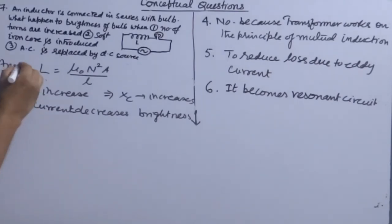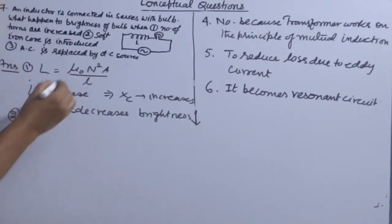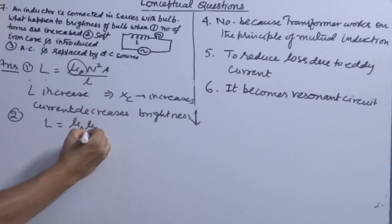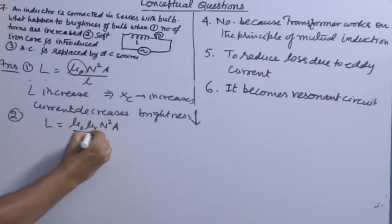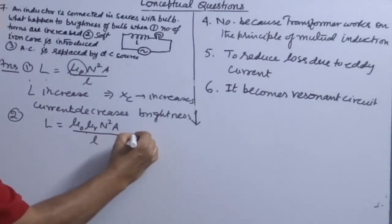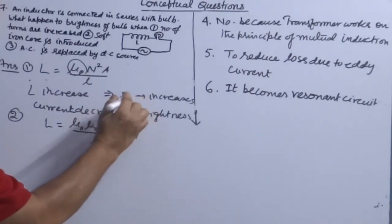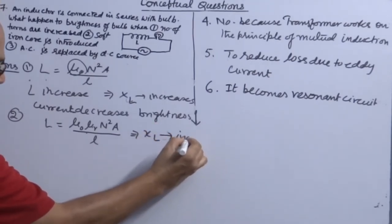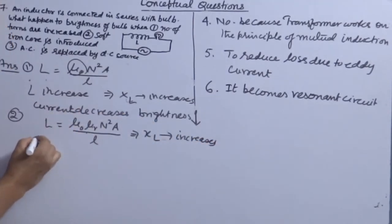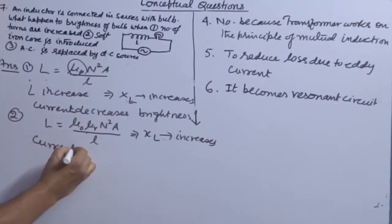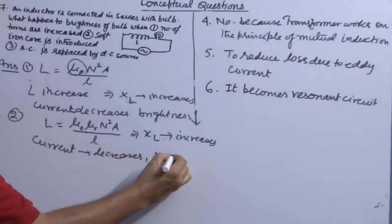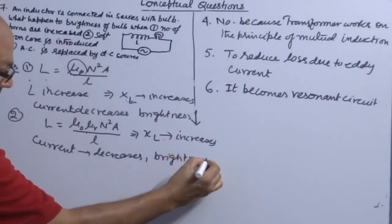Second part: if a soft iron core is introduced, the formula becomes L = μ₀μᵣN²A/l, where μᵣ is relative permeability. So eventually XL increases, current decreases, and brightness decreases.